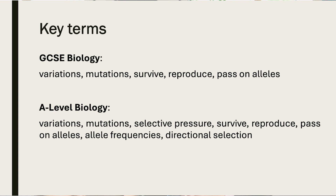These are some suggested key terms to provide students while they are writing their paragraphs. In GCSE: variation, mutations, survival, reproduction, passing on the genes. In A-level: variation, mutation, selective pressure, survival, reproduce, passing on the genes, allele frequency, and directional selection.